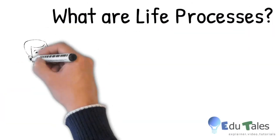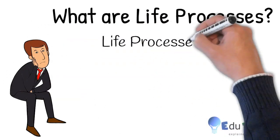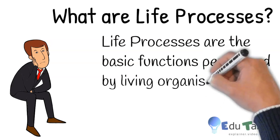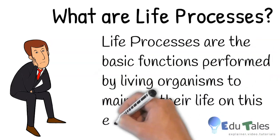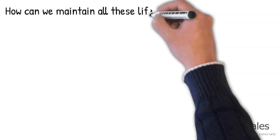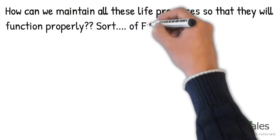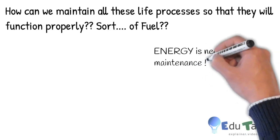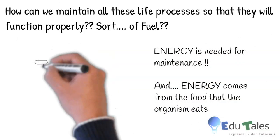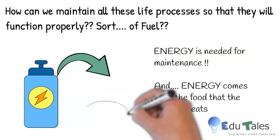Now, what do you mean by life processes? Life processes are the basic functions performed by all living organisms to maintain their life on this earth. To maintain all these life processes properly, energy is needed. That energy comes from the food that the particular organism eats.